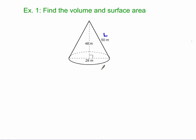let's take a look here. 50, that's our slant height. 48, that's our height. And 28 is the distance from this side to this side. That's the diameter. So my radius is 14, because the diameter is twice the radius.